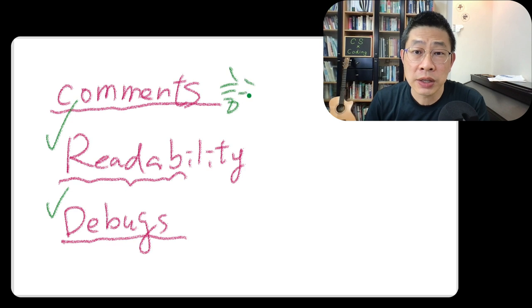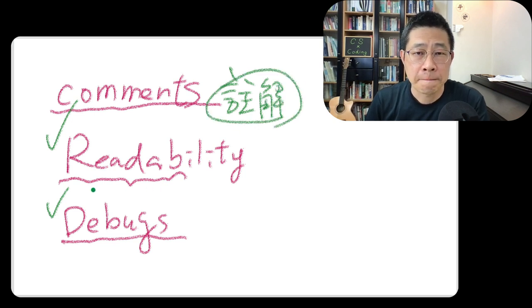So let me write down. In Chinese, 住解, 解式的解. I think that's it.